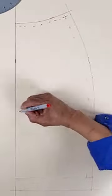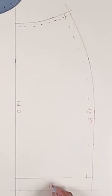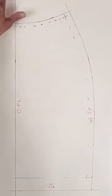Remove the pattern and connect your dots, then add your seam allowance: three-eighths to the waistline, three-fourths to the side seam, and an inch and a half to the hem.